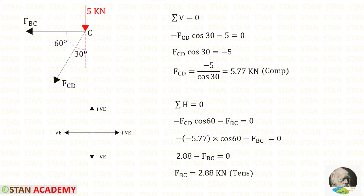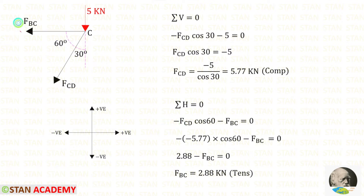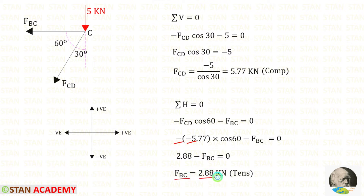Now let us apply the rule Sigma H = 0. FCD is inclined; to make it horizontal we need 60 degrees, so we multiply FCD with cos 60. When we make it horizontal it will be acting towards the left side, so it should be applied as negative. FBC is also acting towards the left side, so it is also negative. We know the value of FCD is 5.77 and it is compressive, so we apply FCD as negative — negative into negative becomes positive. Finally for FBC we will get a positive value, meaning it is tensile.